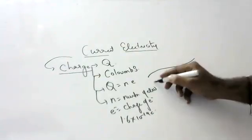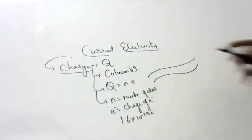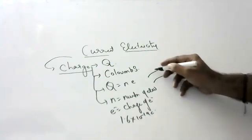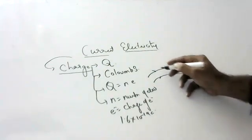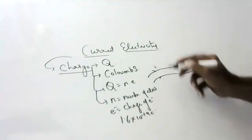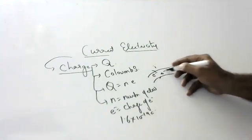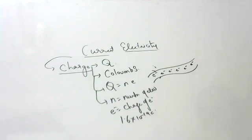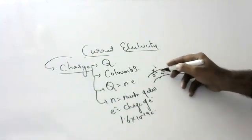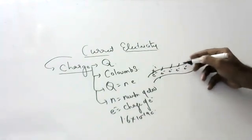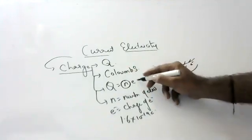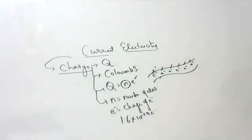Suppose a conductor is a wire. Whenever a current is flowing in it, it means electrons are flowing. So the total number of electrons into the charge of each electron gives you the total charge.